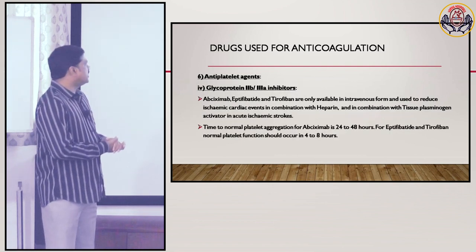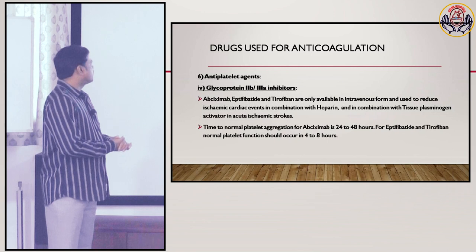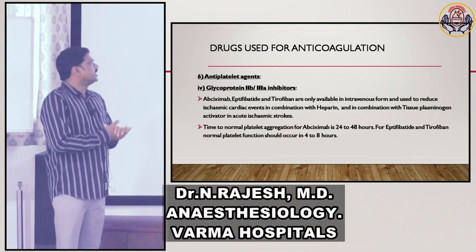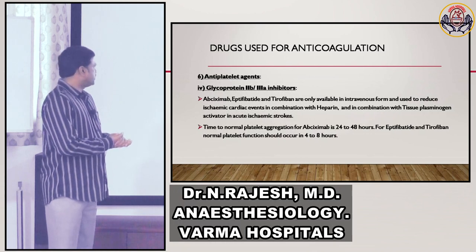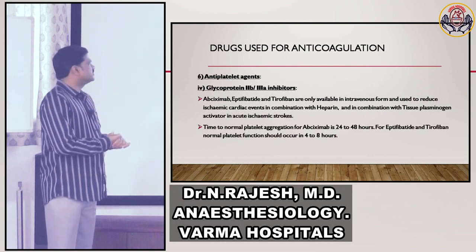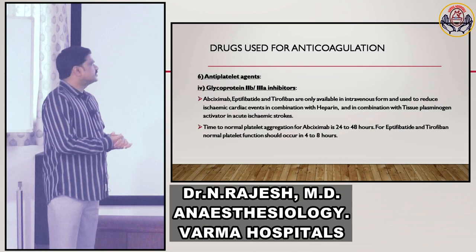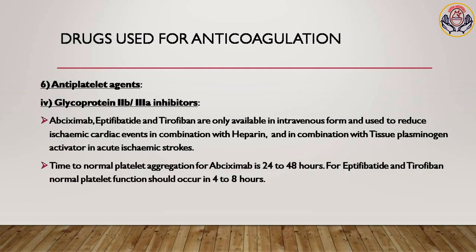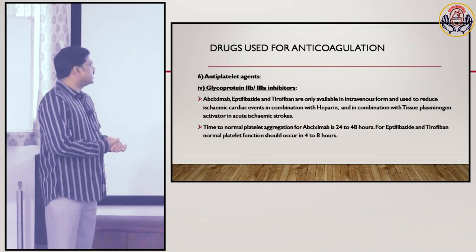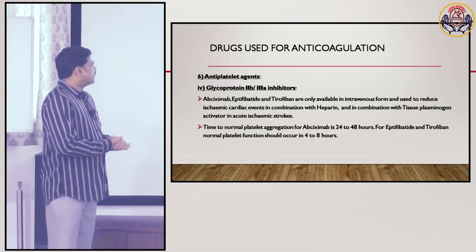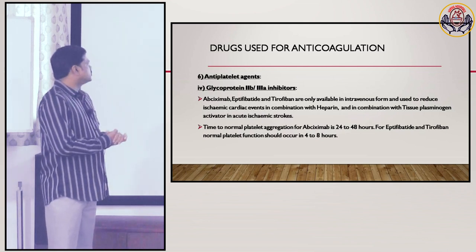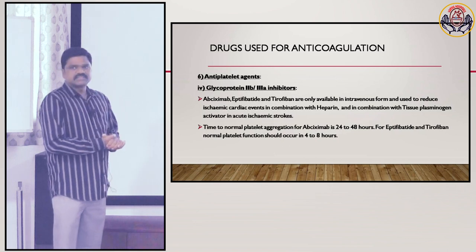Glycoprotein 2B3A inhibitors: abciximab, eptifibatide, and tirofiban are only available in intravenous form and are used to reduce ischemic cardiac events in combination with heparin, and in combination with tissue plasminogen activator in acute ischemic strokes. Time to normal platelet aggregation for abciximab is 24 to 48 hours; for eptifibatide and tirofiban, normal platelet function should occur in 4 to 8 hours.